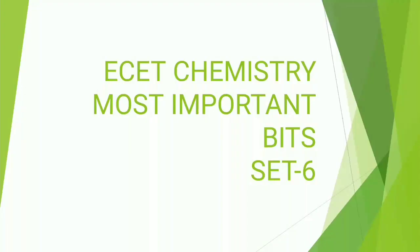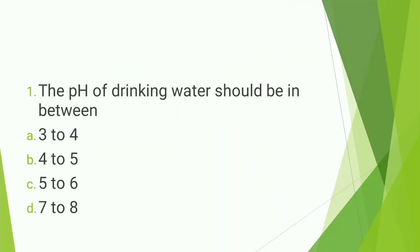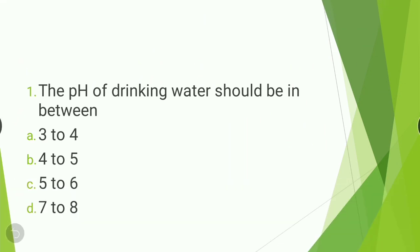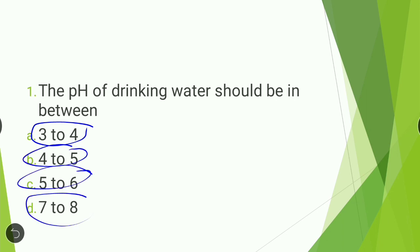Hi friends, this is ESET Chemistry most important worksheet set number six. Let's dive into our video. Question number one: the pH of drinking water should be — 3 to 4, 4 to 5, 5 to 6, or 7 to 8? The answer is option D, 7 to 8.